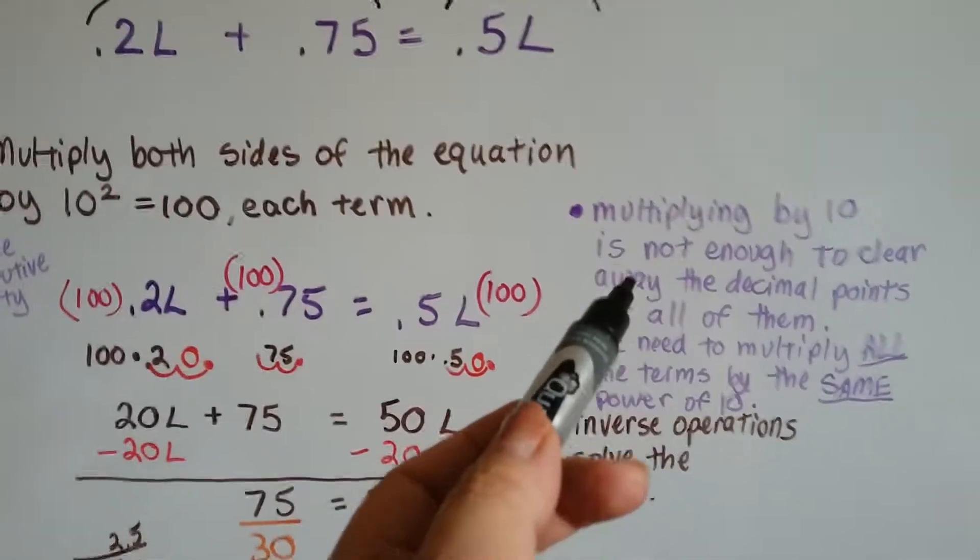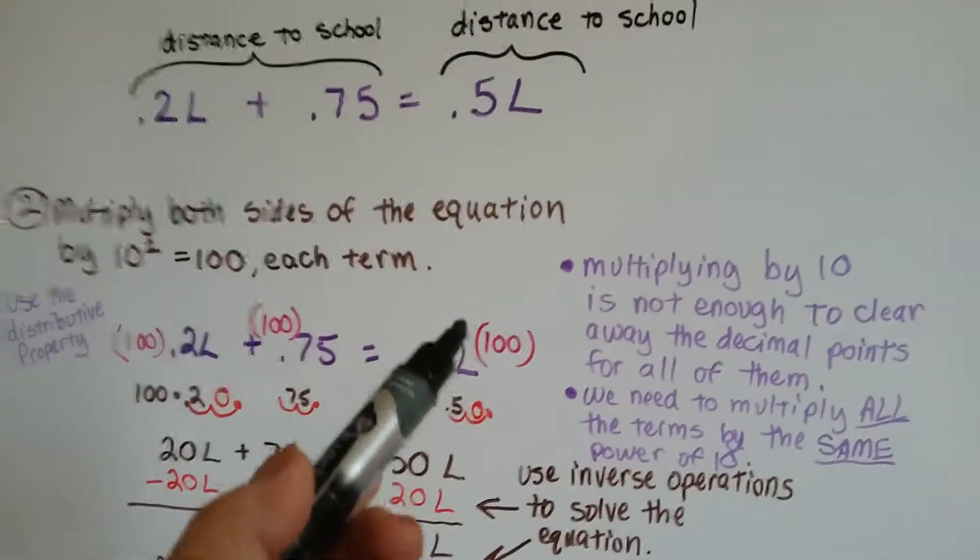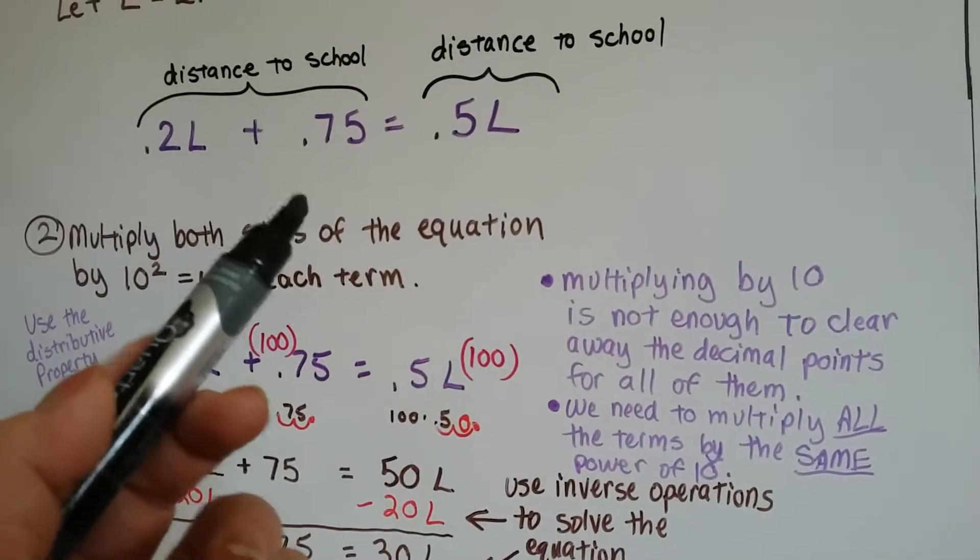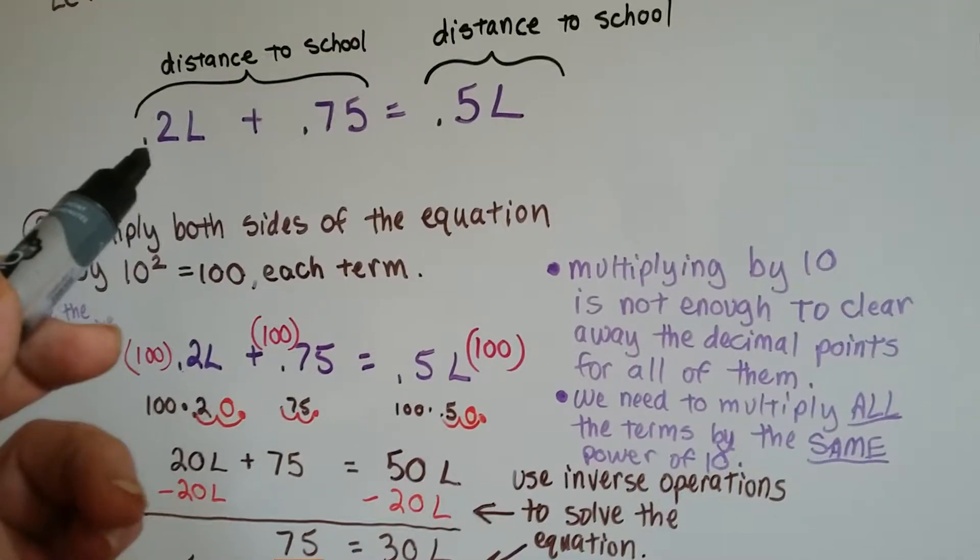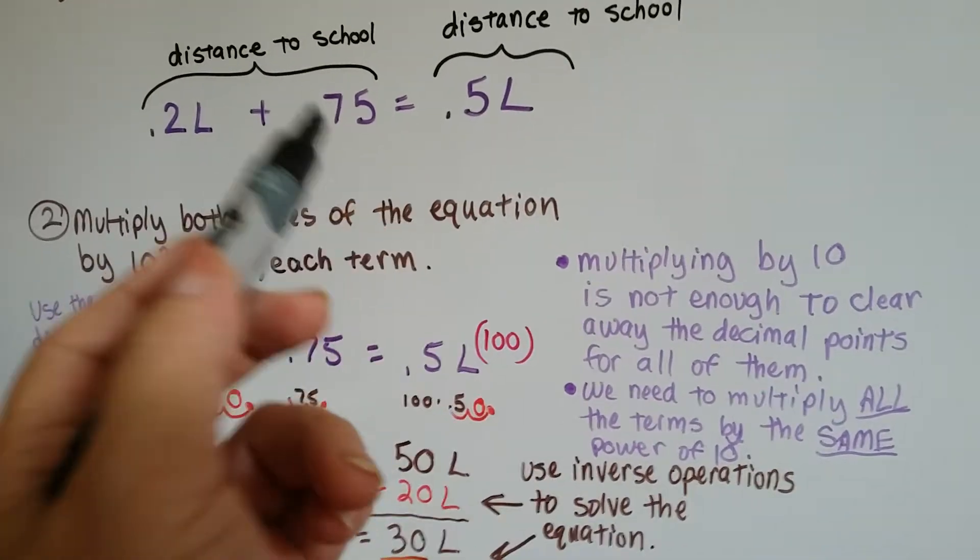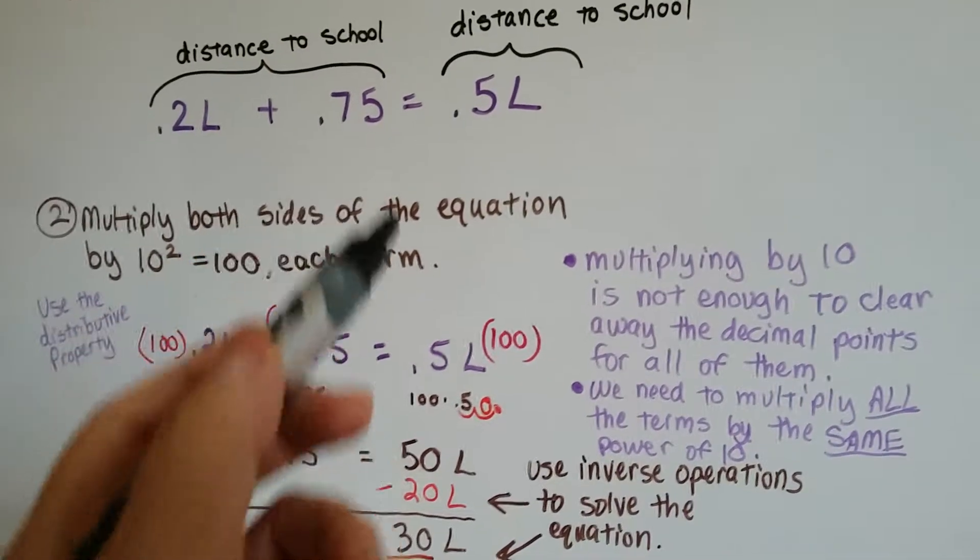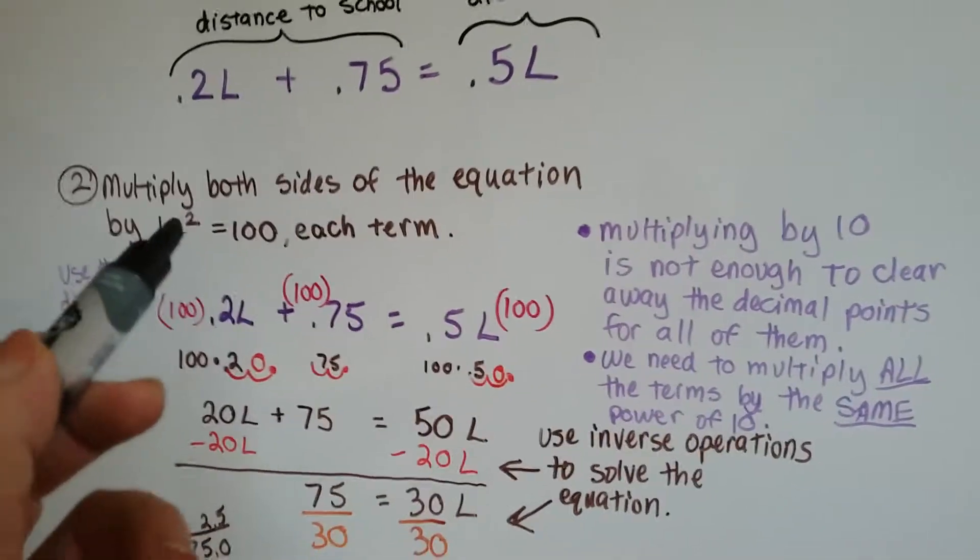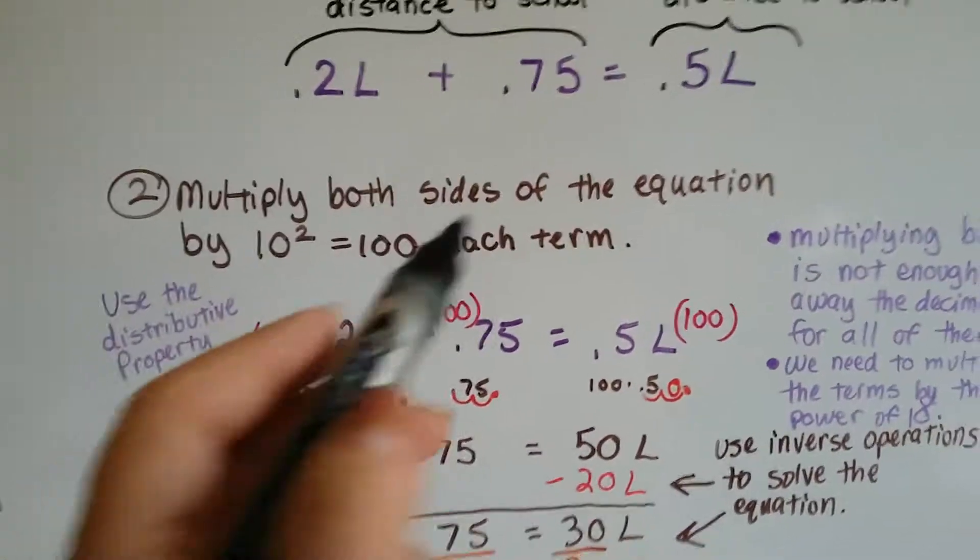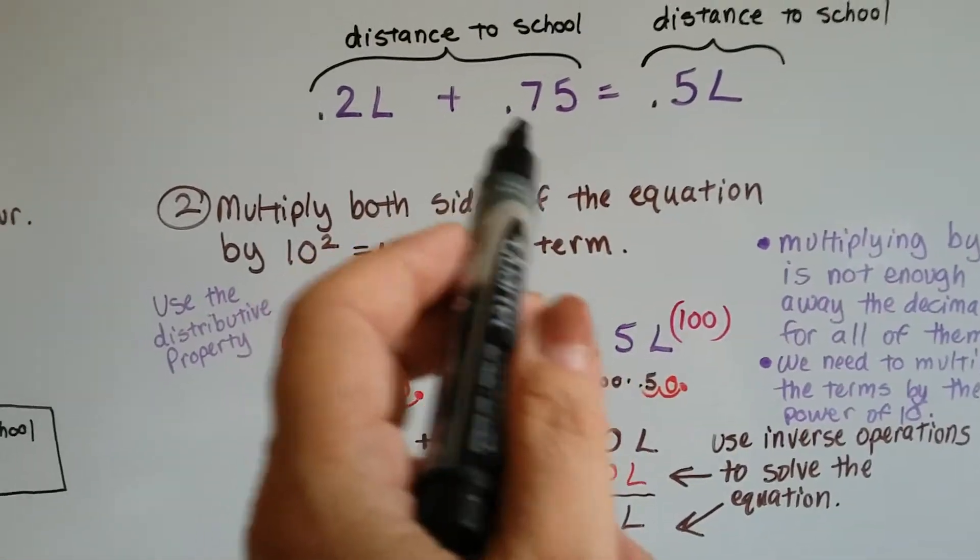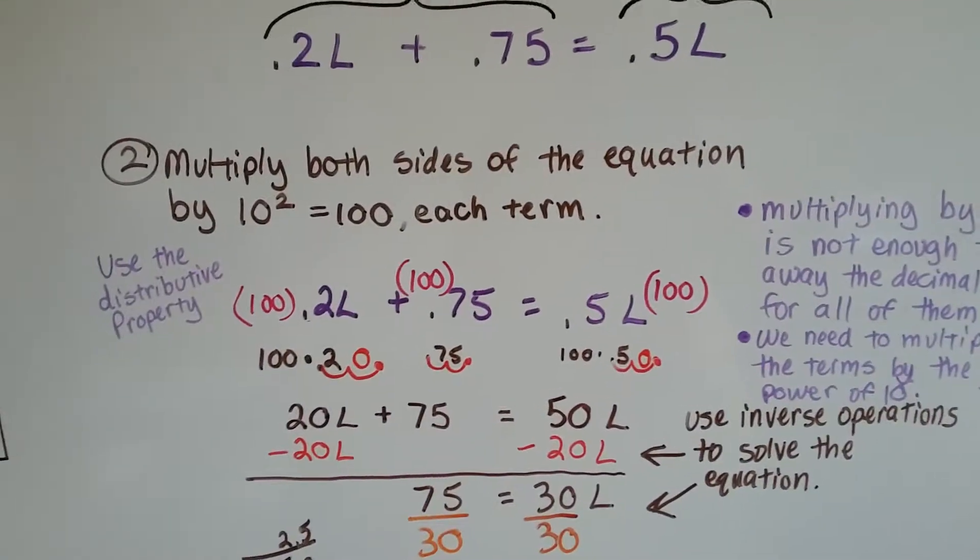Now we could have multiplied by 10, but that wouldn't have been enough to clear away all the decimal points. If we multiplied by 10, it would have worked for this one and this one, but it wouldn't have worked for this one. We would still have had 7.5. So by multiplying it by 10 to the second power, 100, we definitely make sure we clear all the decimals for all the terms.